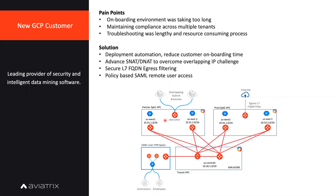Their main pain point was that onboarding those partners was taking too long. Because these partners can bring different types of workloads — they could have different routers or setups behind the scenes. It could be an AWS VPC trying to connect to GCP, or it could be an on-prem branch. So we identified the problem and knew we could solve it.